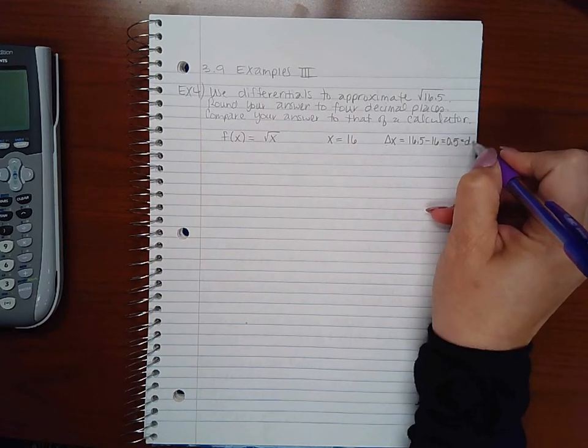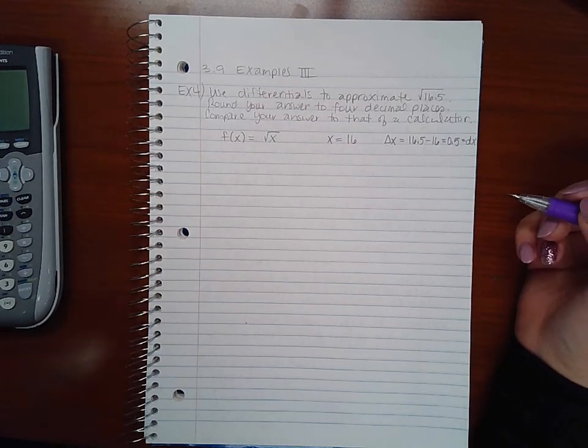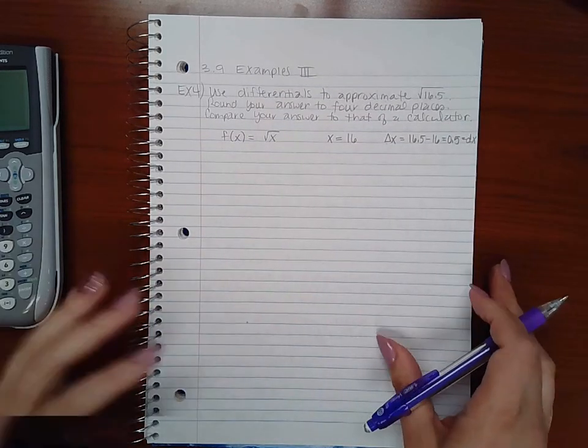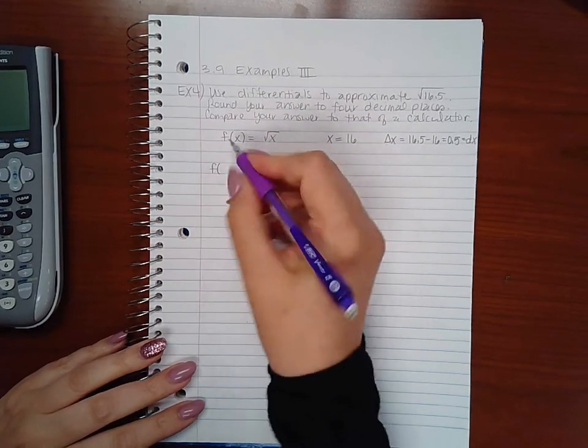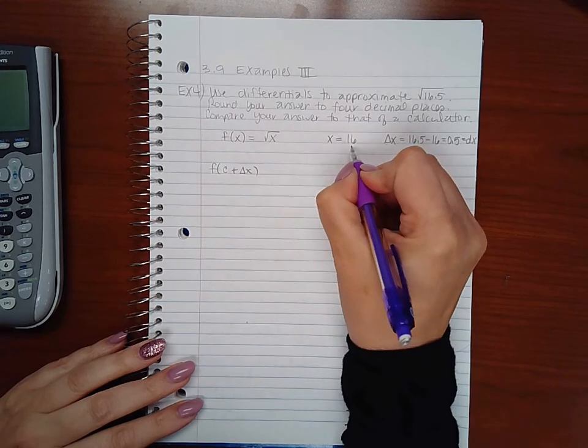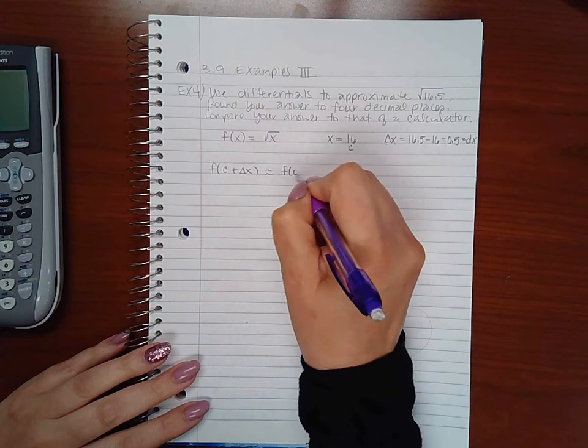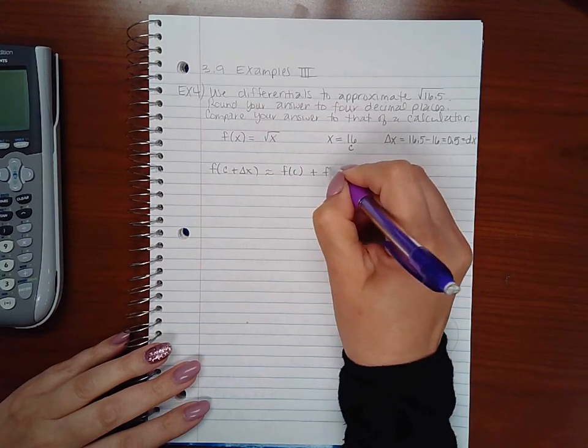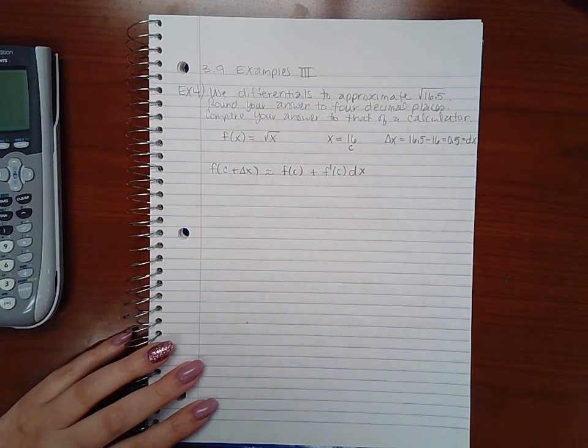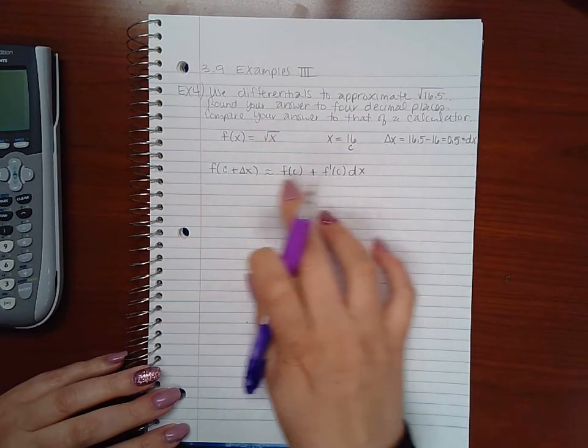If we remember our equations, f of c plus delta x is approximately equal to f of c plus f prime of c times dx. So we need to figure out first what f prime is before we can plug all of this in.